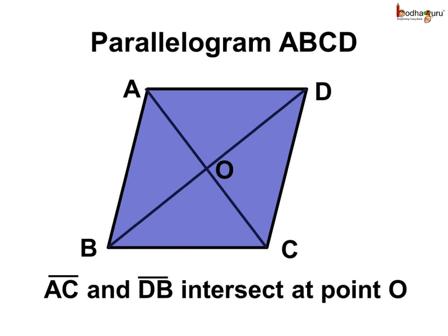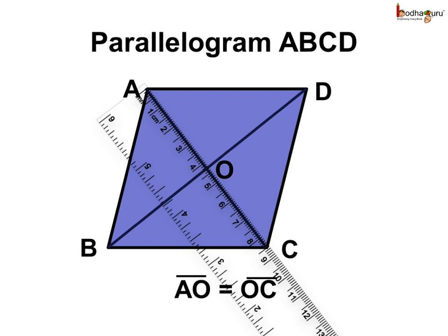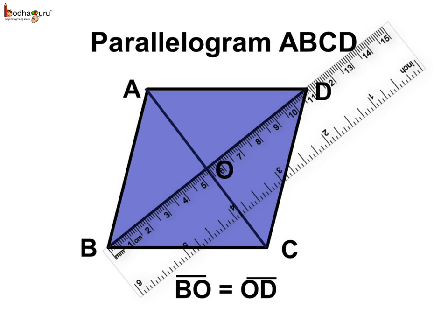The two diagonals intersect at a point — let us call it point O. So diagonals AC and DB intersect at point O. If we measure the diagonal, we see that line segment AO is equal to line segment OC, and both are 4.25 cm. Similarly, line segment BO is equal to line segment OD, and both are 5.45 cm.